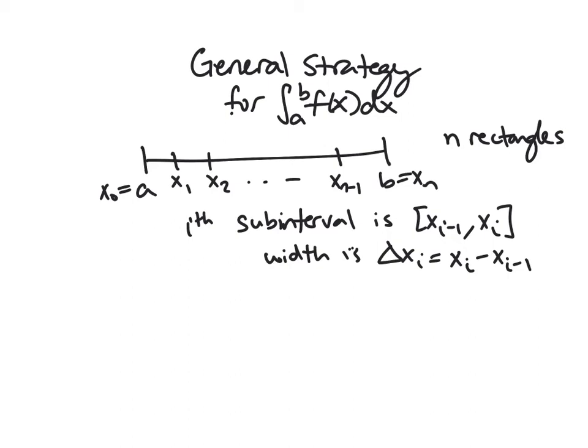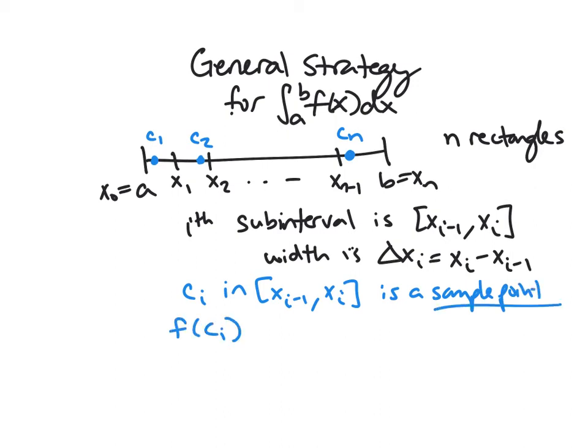How do we get our height? So if you remember back to our example, we plug things into the function. So what do we want to plug in? So you can use left end points, you can use right end points, you could use mid points, you could do in fact anything. So you don't have to be consistent. I'm just going to put some stuff here. So just call this c1, c2, down to cn. And so ci is in the sub-interval from xi minus 1 to xi is called a sample point. And so this will give us our height by plugging into our function. So f of ci is the height of the rectangle on that sub-interval.